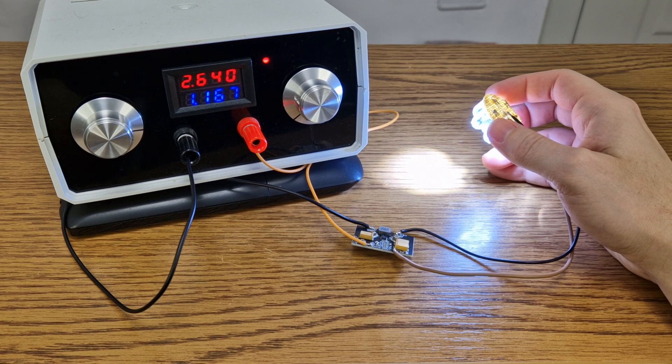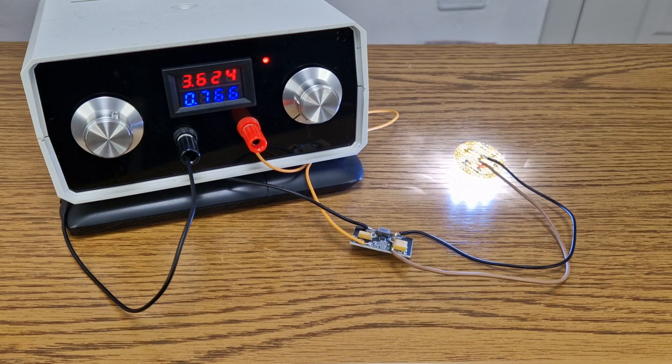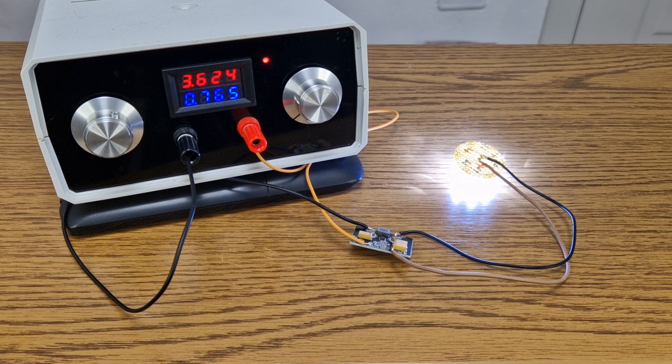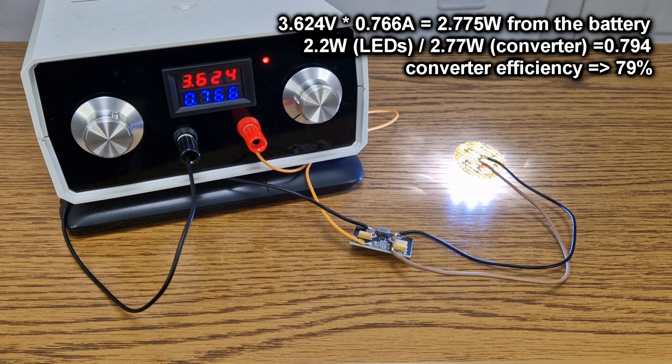So what is the efficiency of this converter for this project? Lithium ion cells have a nominal voltage between 3.6 and 3.7 volts. At this voltage the converter draws 766 milliamps, so 2.77 watts of power from the battery. And we know that the LEDs use 2.2 watts at 3.3 volts. So the average efficiency of this converter with a small load is 79%.